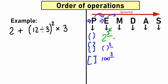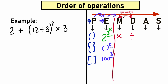Letter M stands for multiplication, and letter D stands for division. Here's a tricky moment. A lot of students think that M is before D in terms of priority, and that multiplication comes before division. But it doesn't work like that. Multiplication and division have the same priority. We can swap their order from left to right.